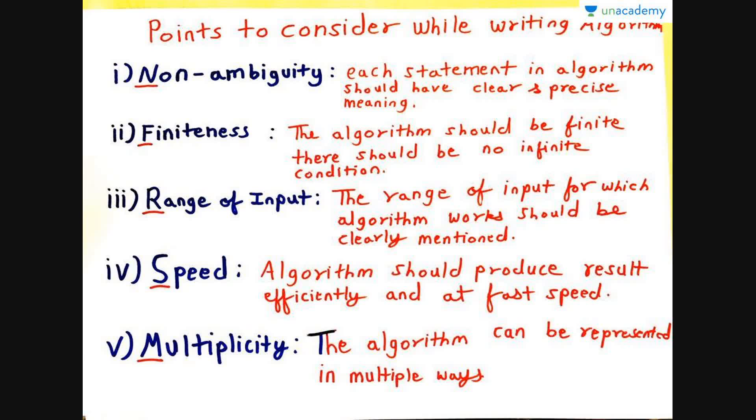So now, how will you remember these things? There's a very famous game that is Need for Speed. And so I've underlined the first letters of the words of the points that you have to remember. That is N F R S M. So you can remember Need for Speed is a Multiplayer game. Now that's how I remember and it's easy to remember. So always try to make some song or some names which are easy to remember. So you can remember Need for Speed is a Multiplayer game, where N Need is non-ambiguity, F finiteness, R for range, Speed is as it is speed, and Multiplayer game you can put it as multiplicity.